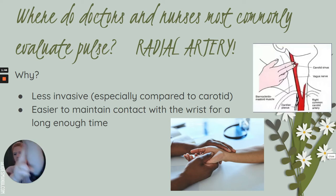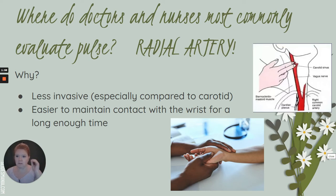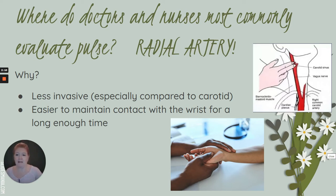Here is my forearm — I'm going to go thumb side, right here in this space. Why do doctors and nurses usually measure there? It's less invasive, especially compared to the neck. Also easier to maintain contact with the wrist for a long enough time. Usually you're going to measure for 20 or 30 seconds and then multiply to get that per-minute value.